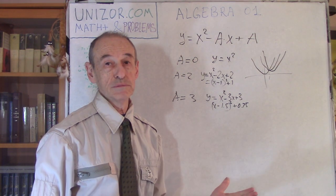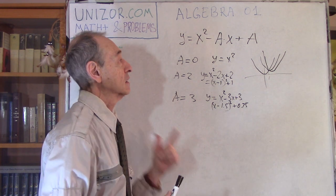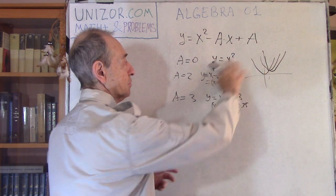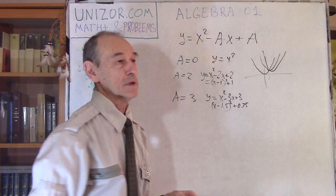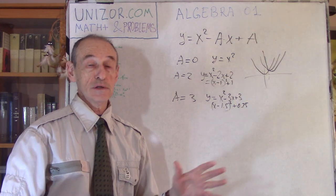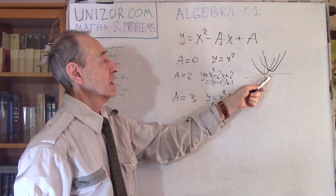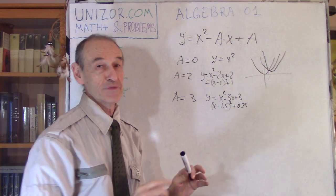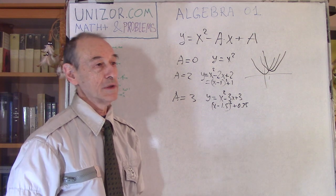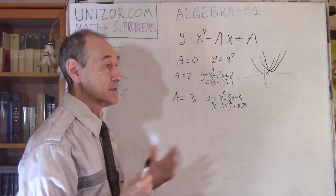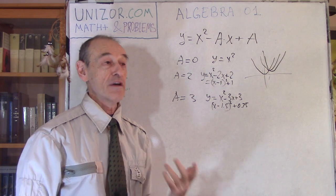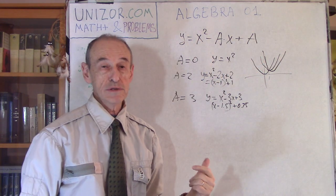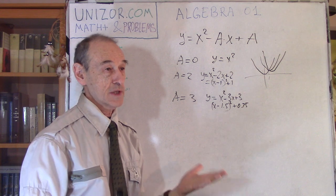And now the problem — actually there are two problems. The first problem is: find the point on the plane where all these parabolas pass through, regardless of the value of a. In this case we have a equal to 0, 2, and 3, and they look like they're crossing at point (1, 1) on my imperfect picture. You have to prove it. Is there a point on the plane which is common for all these parabolas, and if so, what is it?